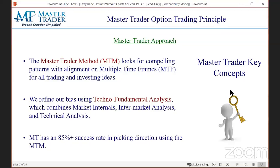TastyTrade says picking direction is a coin flip. Well, then query why we have an 85 percent success rate in picking direction on both our directional trades and income trades. Income trades is where we're just selling options, calling a short-term top or bottom. We'll give you many examples of that.